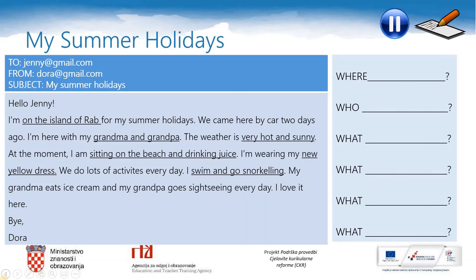Dora is a girl from Croatia and she has written an email to Jenny about her summer holidays. On the right side of the screen you can see some question words. There are some underlined sentences in Dora's email that can help you. Pause the lesson now, read the email and write the questions in your notebooks.